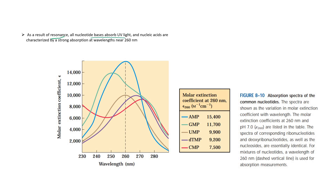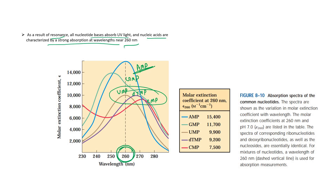Due to resonance, nucleotides have the property of UV light absorption. Nucleic acids are characterized by strong absorption at a wavelength near 260 nanometers. The highest absorption is shown by AMP, then GMP, followed by UMP, dTMP, and CMP — the last three showing almost equal absorption. The absorption is expressed using the molar extinction coefficient.